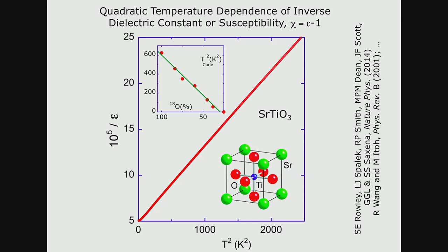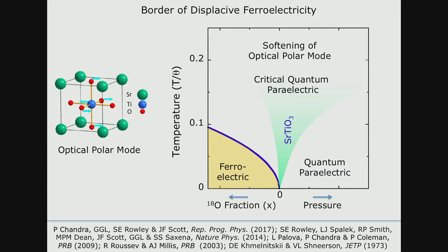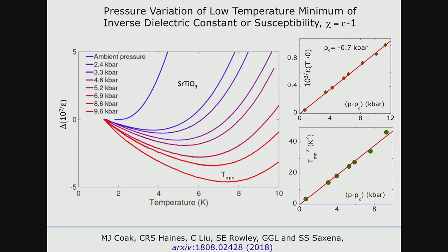However, this picture only holds right at the quantum critical point. If we go out in pressure, we lose this quantum critical behavior and get into activated behavior where the inverse susceptibility is a slowly varying, monotonically increasing function of temperature — predicted both by the self-consistent mean field theory and the famous Barrett model traditionally used to describe the quantum para-electric state. However, this picture breaks down: instead of a monotonically increasing dependence, we get a drop — a minimum — as shown here.